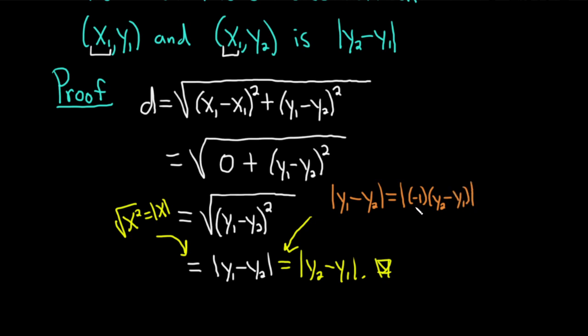And you can check: negative 1 times y₂ is negative y₂, and negative 1 times negative y₁ is positive y₁.